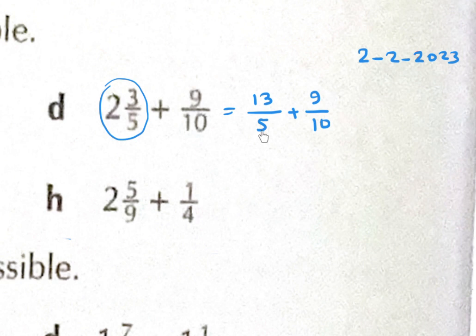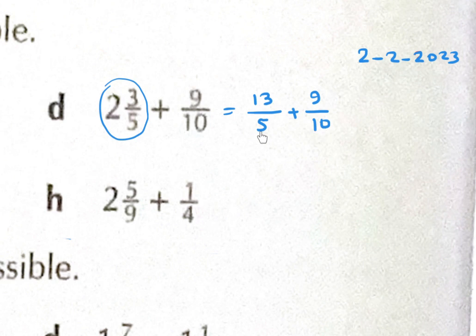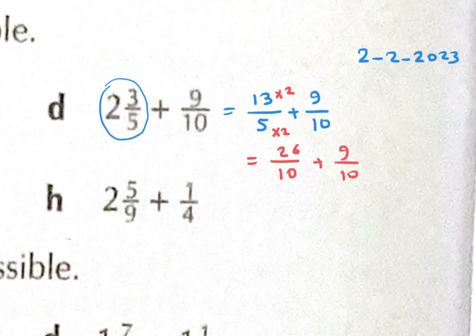You can multiply 5 by 10 and 10 by 5, but you'll get large numbers. It's better to find the lowest common denominator. Since 10 is divisible by 5, multiply 5 by 2 to get 10, and multiply 13 by 2 as well. Now you have 26 over 10 plus 9 over 10, which equals 35 over 10. We can simplify by dividing by 5.